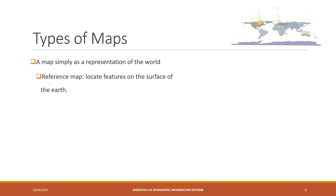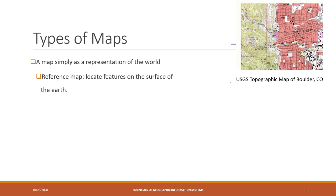The first type is a reference map, which basically tells you the locations of features. For example, the USGS topographic map is one example — you can follow this map and use it for navigation, traveling, etc.